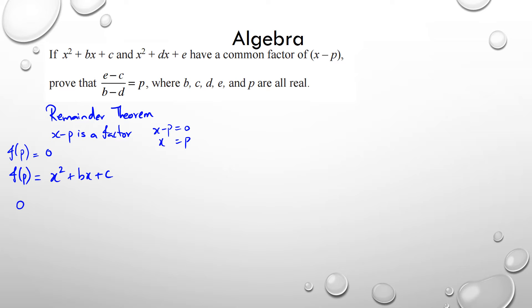So in this case, we're going to have zero is equal to p squared plus b times p plus c. So that was for the first function.